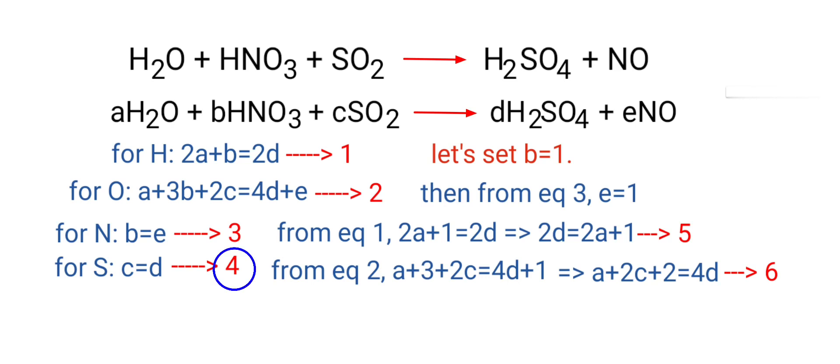Now you can apply equation 4 in equation 6. So A plus 2D plus 2 is equal to 4D. So A plus 2 is equal to 4D minus 2D.